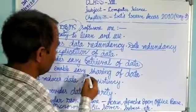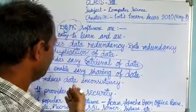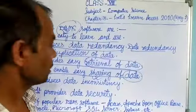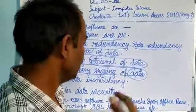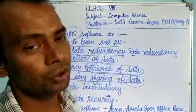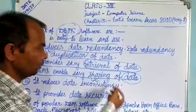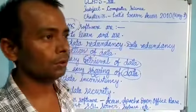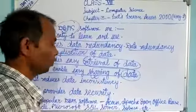DBMS enables easy sharing of data. If we have data in one table, we can easily share it to another table. We can make queries from the tables, we can make forms, and we can make reports from the tables. So essentially, we are sharing the data — we have data in tables but can easily form reports and queries using that data.